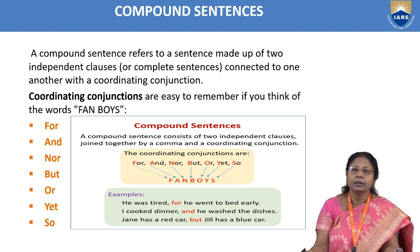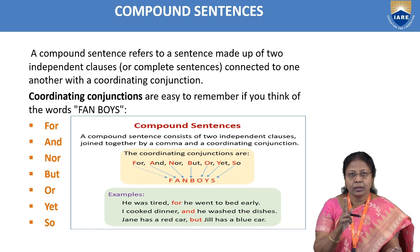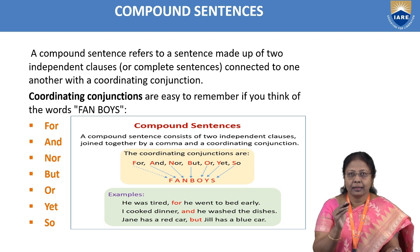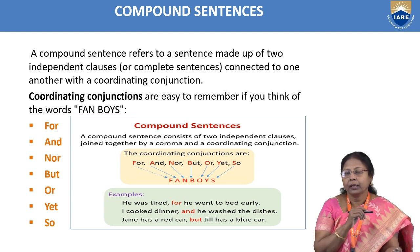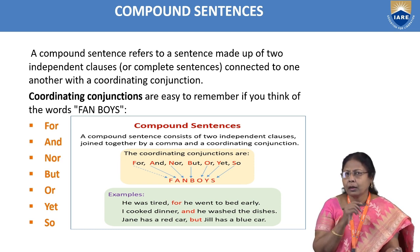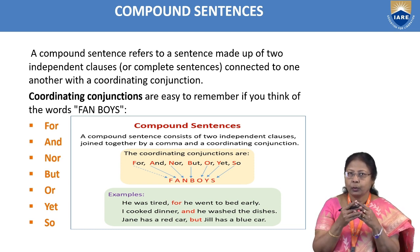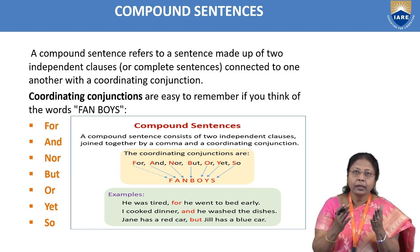A compound sentence refers to a sentence which is made up of two independent clauses — two independent clauses which give complete sense, connected by a coordinating conjunction. These coordinating conjunctions combine or club two sentences, that is, two independent clauses.